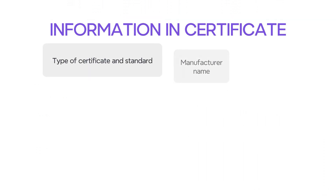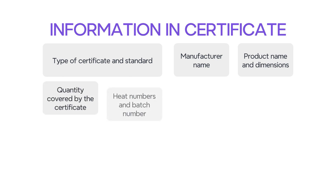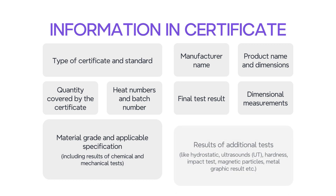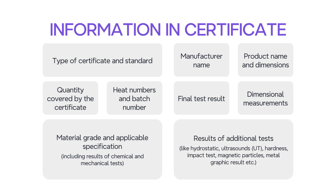In general, a mill test certificate shows the following information: type of certificate and standard, manufacturer name, product name and dimensions, quantity covered by the certificate, heat numbers and batch number, final test result, dimensional measurements, material grade and applicable specification, including results of chemical and mechanical tests, and results of additional tests like hydrostatic, ultrasound, hardness, impact test, magnetic particles, and metallographic results.